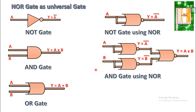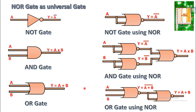Next, implementing OR using NOR. We use two NOR gates. For the first NOR gate, A and B are the inputs, and the output is Y equal to the complement of A plus B. This is given to the second NOR gate, producing Y equal to the double complement of A plus B, which equals Y equal to A plus B. Hence we can implement all basic gates using NOR, confirming NOR gate is also a universal gate.